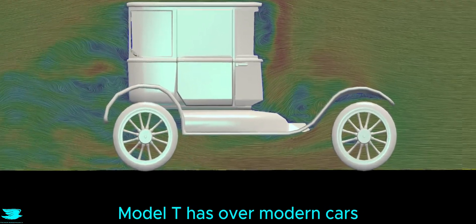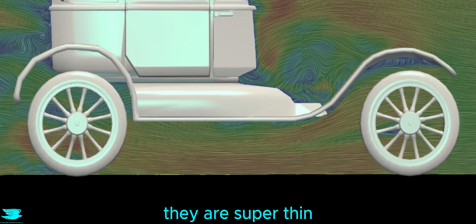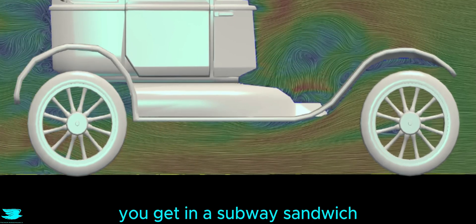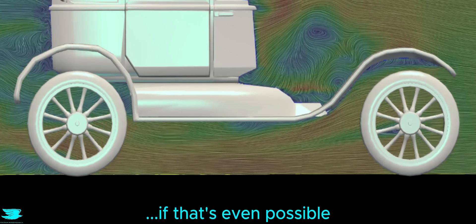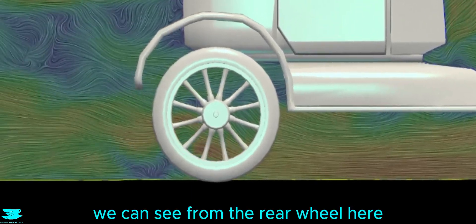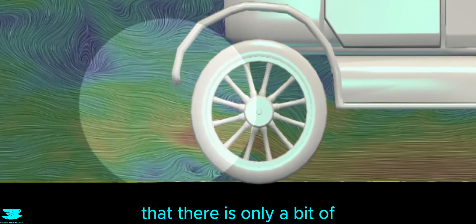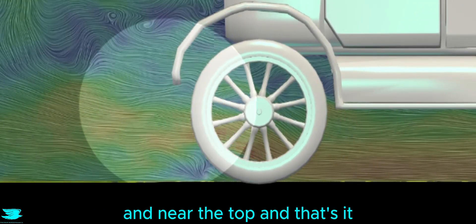One major advantage the Model T has over modern cars is its wheels. They are super thin, even thinner than the ham you get in a subway sandwich, if that's even possible. As a result, they don't create much of a wake. We can see from the rear wheel here that there is only a bit of a wake at the base and near the top, and that's it.